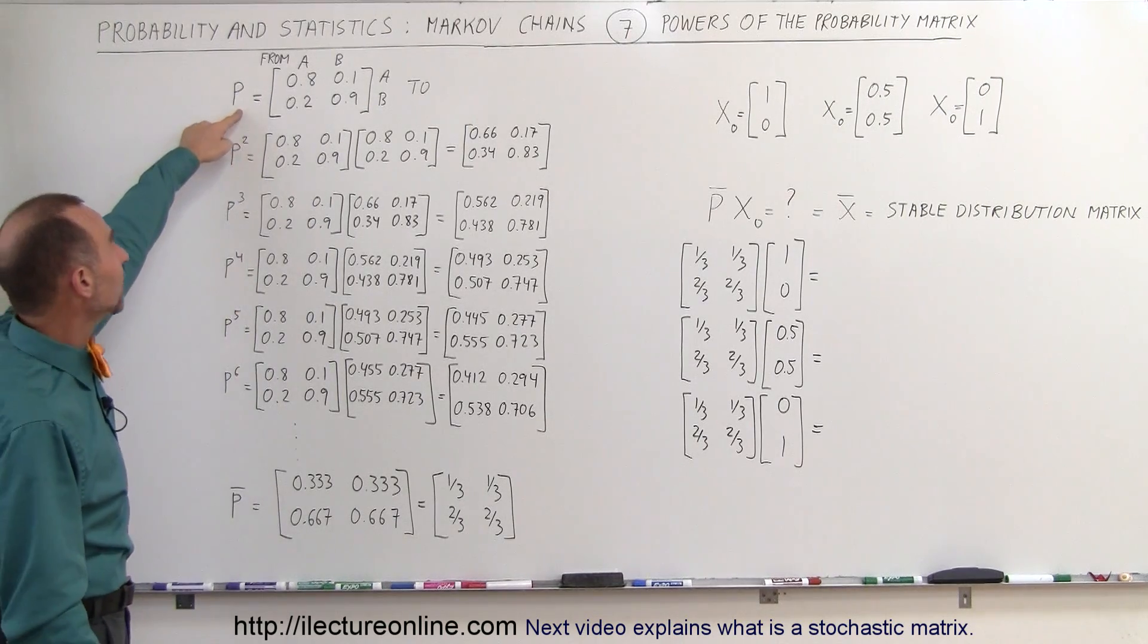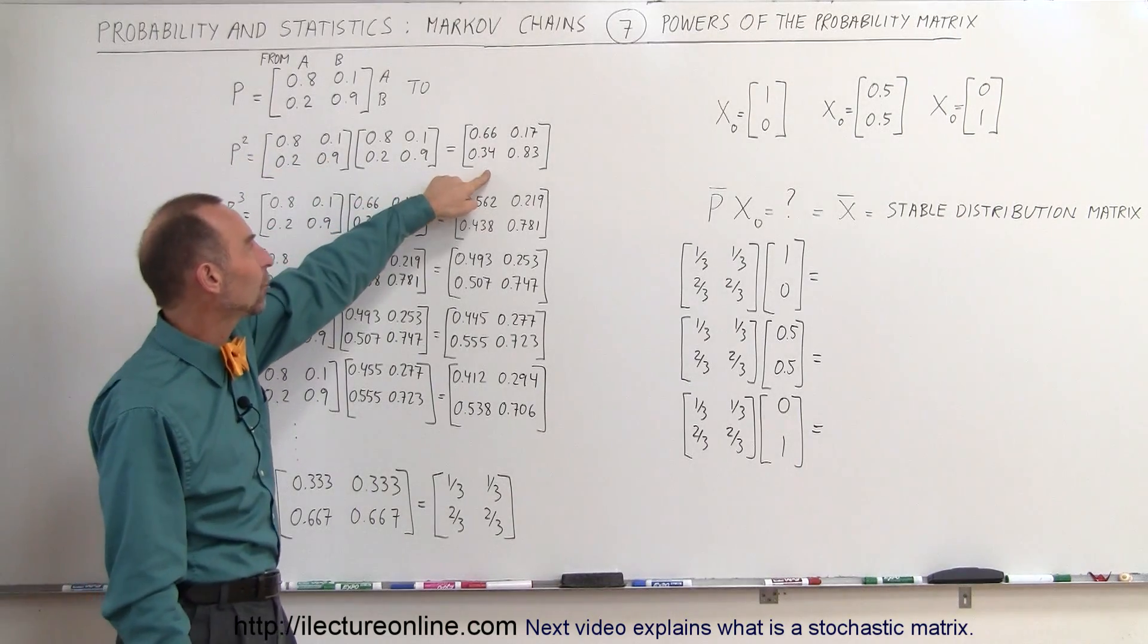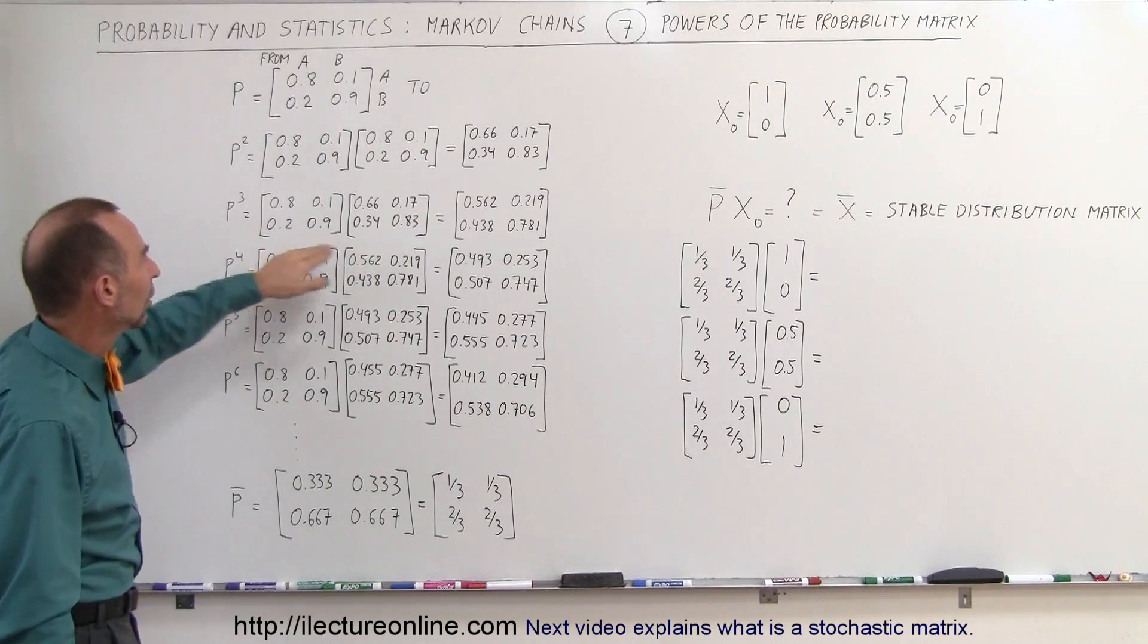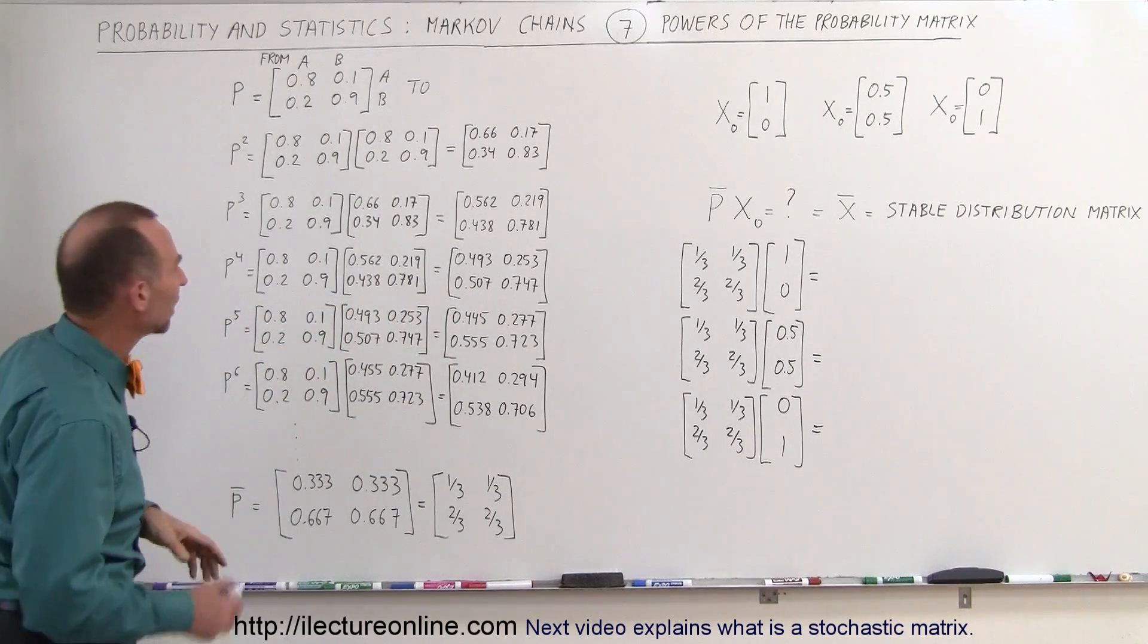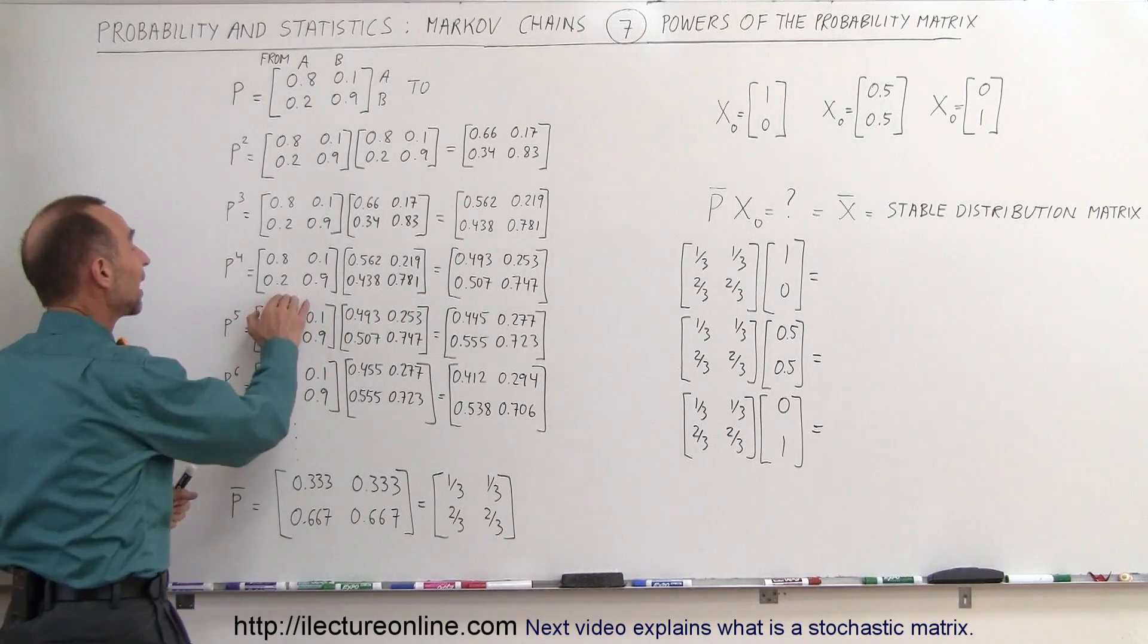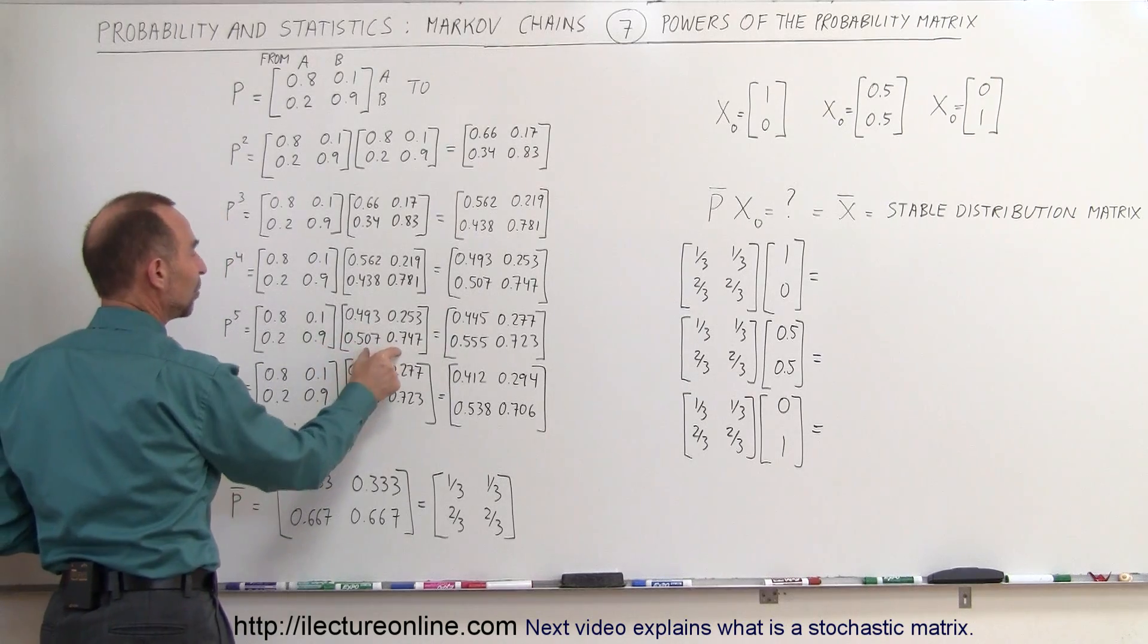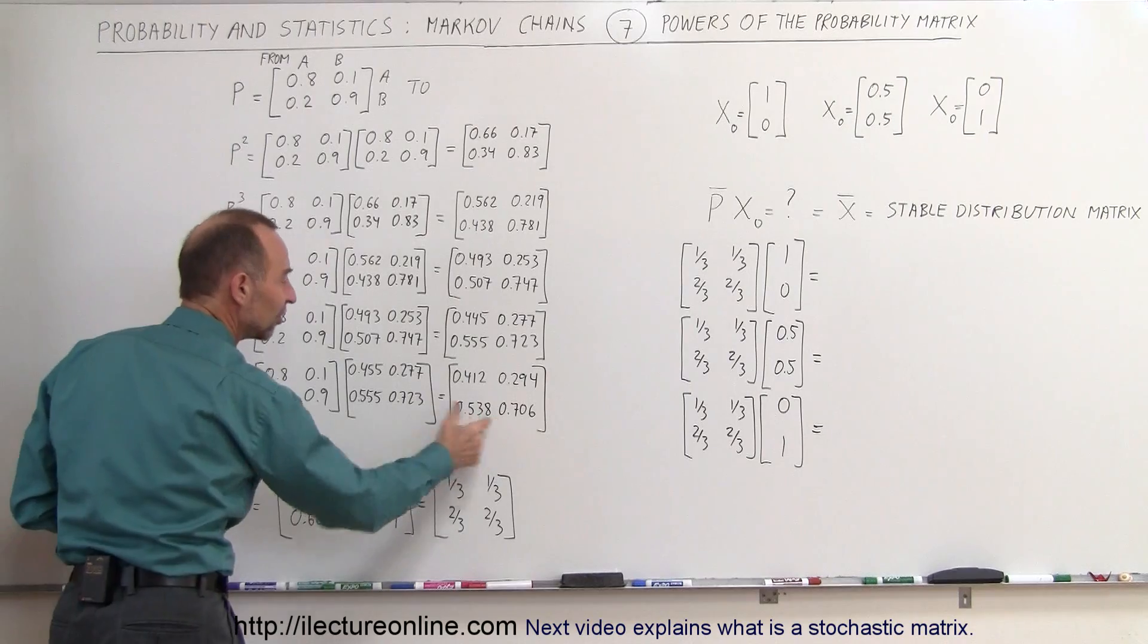So we take that initial probability matrix, and we now find P squared, and we notice that this is the result for P squared. We take P squared multiple times P to get P cubed. We get this. We take P cubed multiple times P to get P to the, oh, and I actually have the other way around. It's P times P cubed to get this P to the fourth, and P times P to the fourth to get P to the fifth, and P times P to the fifth to get P to the sixth, and so forth.